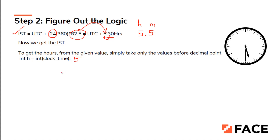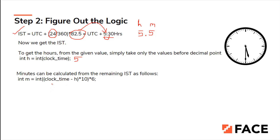To calculate minutes, clock_time is 5.5, so subtracting the integer part (5) gives 0.5. Then 0.5 multiplied by 10 gives 5, and multiplying again by 6 gives 30. So m equals 30. This conversion applies for any decimal value to convert it into proper minutes. So 5.5 becomes 5 hours 30 minutes in proper timing.